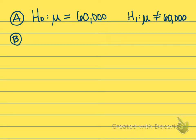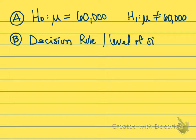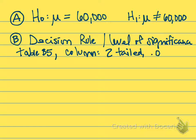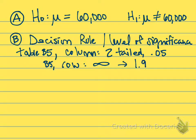The second part of our question says state the decision rule. To do this, we're going to use that level of significance and go to table B5. We're going to go to the column that says two-tailed test and significance level of 0.05. For the row, remember when we're finding our decision rule, we always go down to the infinity row, the very last one, and so we would get 1.96.